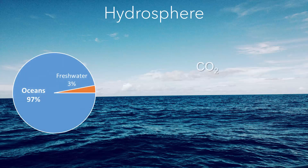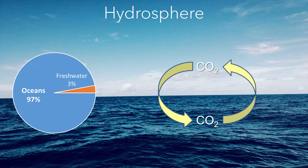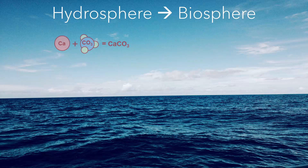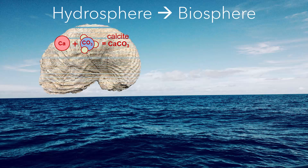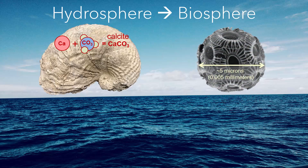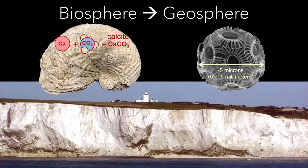The world's oceans represent the vast majority of the hydrosphere. Carbon dioxide and other gases are exchanged between the atmosphere and the ocean. The carbon becomes part of a carbonate ion that combines with calcium to form the mineral calcite, as it becomes part of the biosphere to build shells for things like oysters and clams, as well as billions of microscopic organisms like cocolithophores. The rock limestone forms when these organisms die and are buried and compacted into the layers of rock on the sea floor.